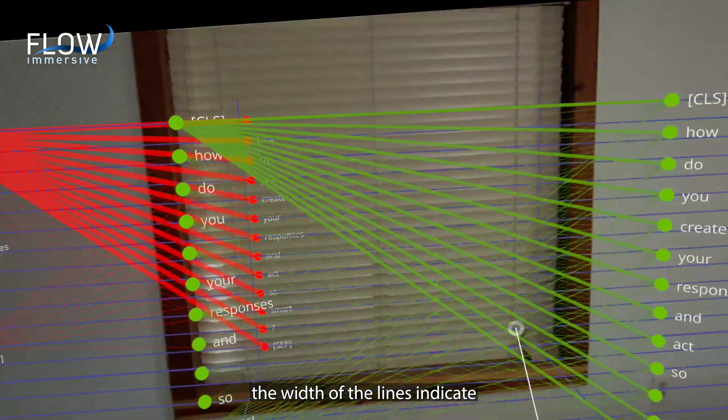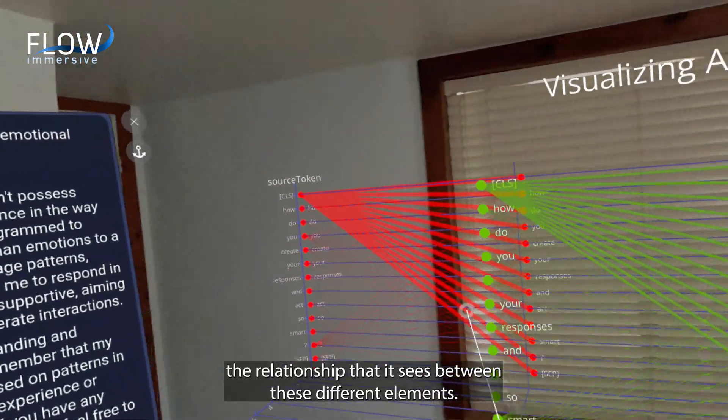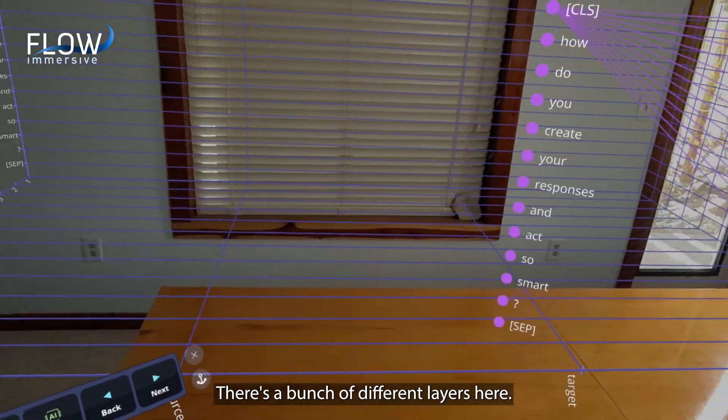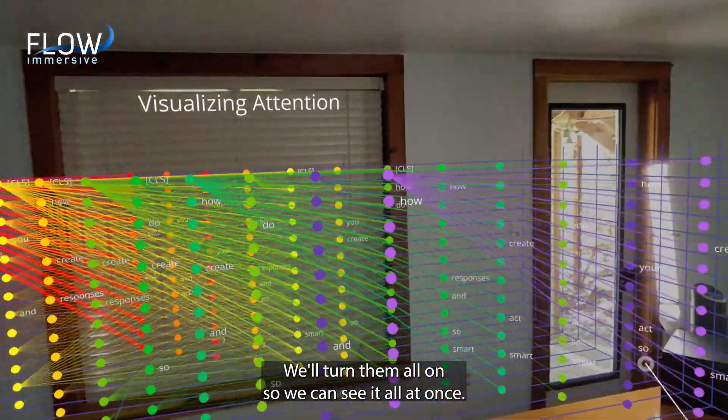The width of the lines indicate the relationship that it sees between these different elements. There's a bunch of different layers here. We'll turn them all on so we can see it all at once.